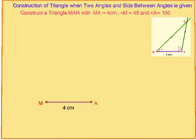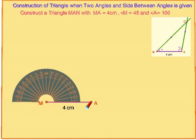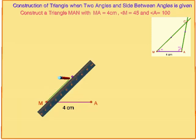with M as center, make an angle of 45 degrees and draw a ray from the initial line segment MA.